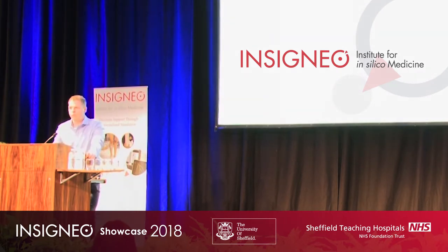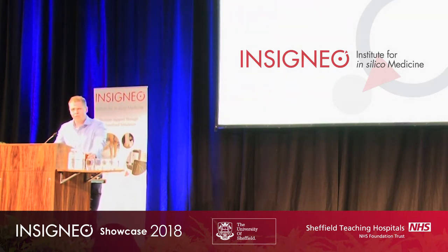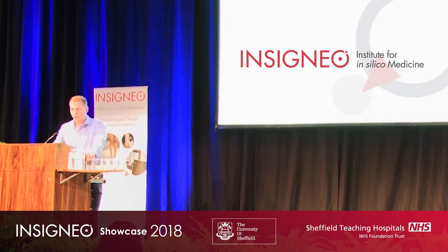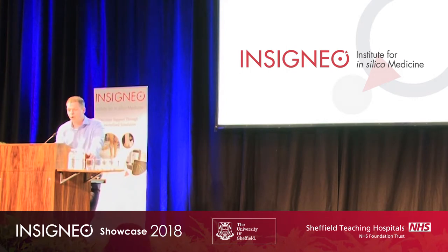But how do we know when we should do a stenting procedure or when to do an operation? They're quite big decisions. Well, we do tests — there's a whole host of tests for coronary disease focusing on diagnosis, assessing severity, distribution and prognosis. But there is one test that is arguably more important than all the others: the invasive angiogram, because anybody who gets a stent or has an operation must have an invasive angiogram first. So it's a final common test.